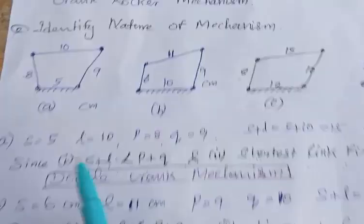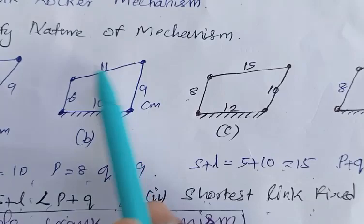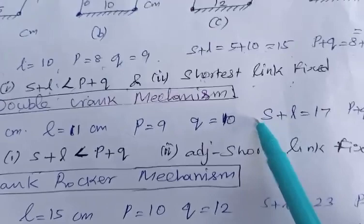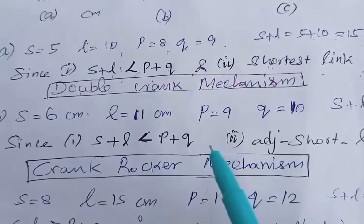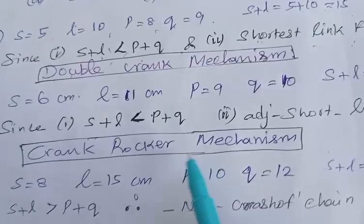For figure B, the fixed link is 10 cm, and the link lengths are 6, 9, 10, and 11 cm. Shortest = 6, longest = 11, P = 9, Q = 10. S + L = 17, P + Q = 19. Since S + L ≤ P + Q and the link adjacent to the shortest link is fixed, we get a crank-rocker mechanism.